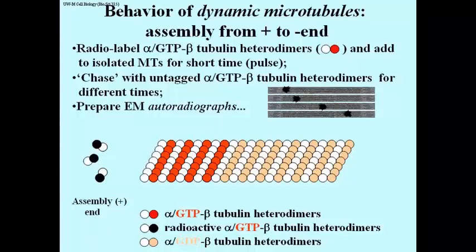If you take some microtubules out a little later during the chase — shown in the second autoradiograph from the top — you would find that the silver grains are no longer at the very end of the microtubule, but somewhere within it. If you wait a little longer, most microtubules sampled by autoradiography show radioactivity somewhere near the center of the microtubule. If you wait still longer during the chase, the radioactivity is once again near an end of the microtubule. What you're looking at is many autoradiographs, some microtubules sampled at each of the different times during the chase.